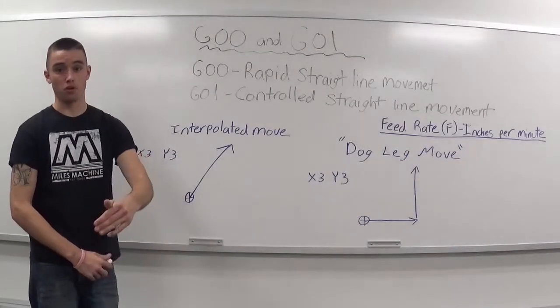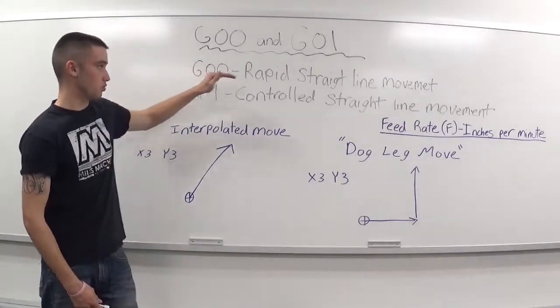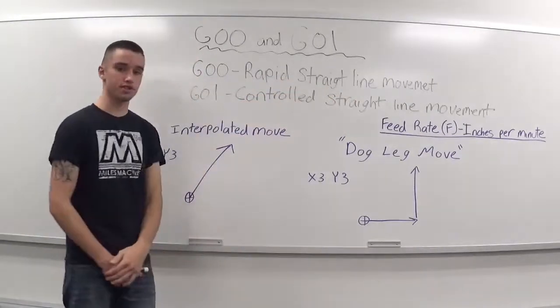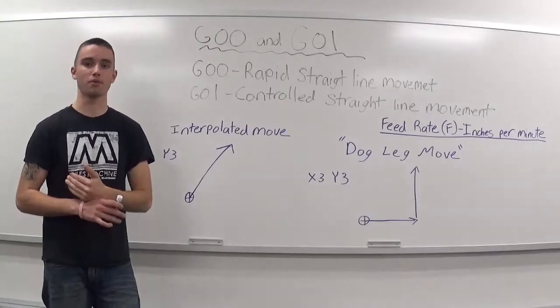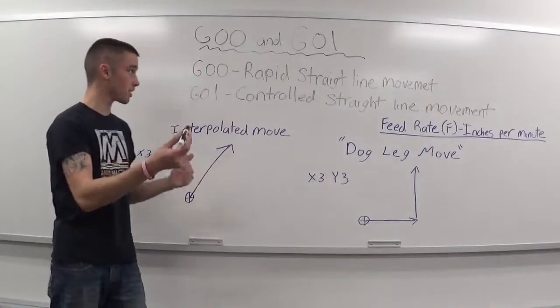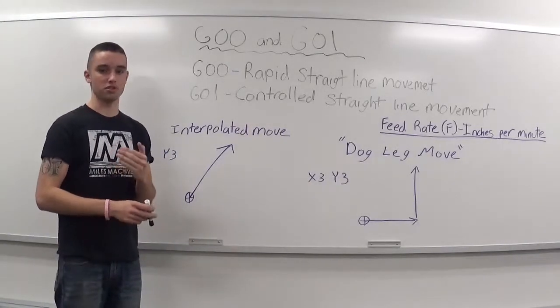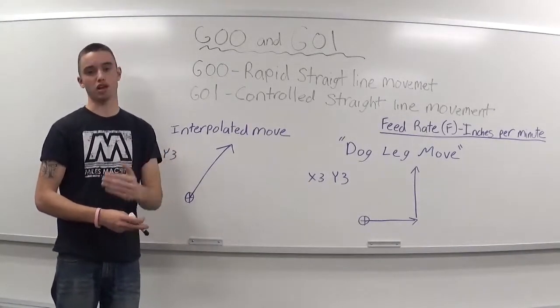In today's lesson, we'll be going over G00 and G01. G00 is a rapid straight line movement. You use G00 when you're trying to save on cycle time, when you're trying to move a tool from one point to another point quickly. You'll never use G00 when you're actually milling, drilling, tapping, anything to do with the actual workpiece.